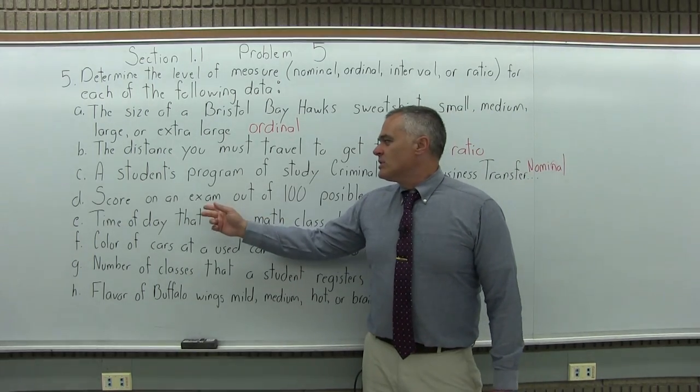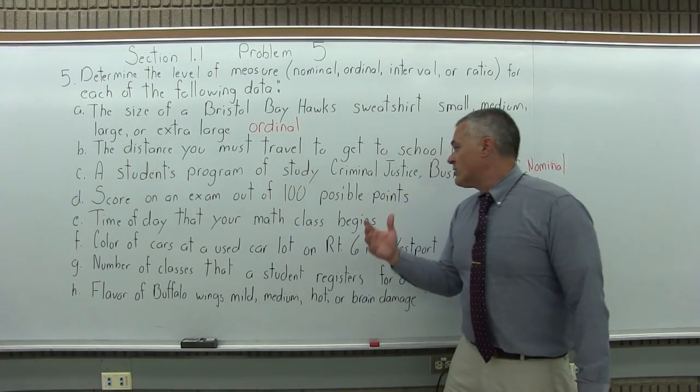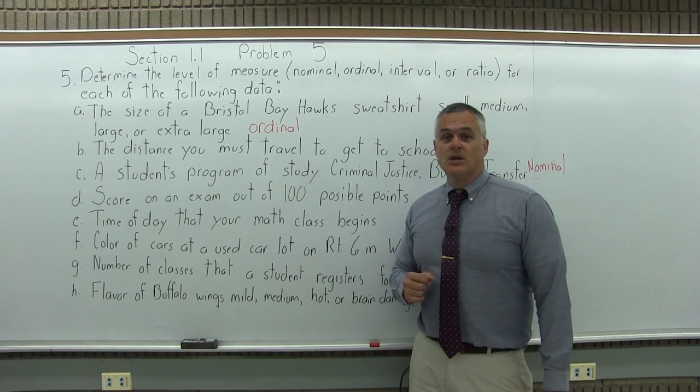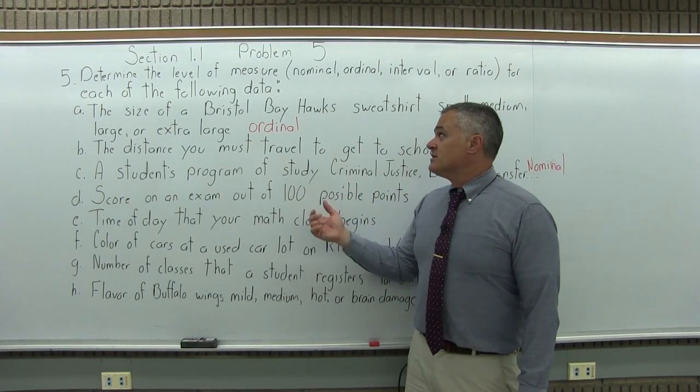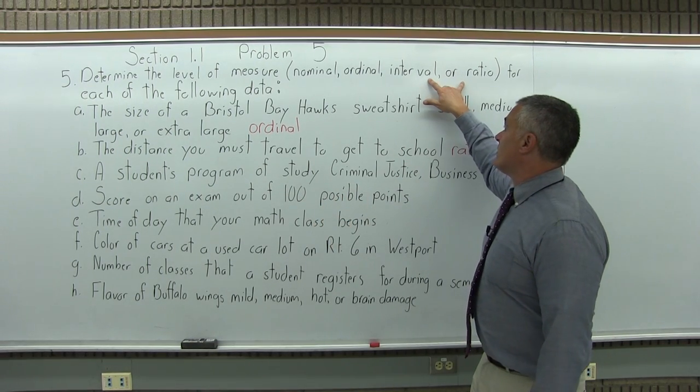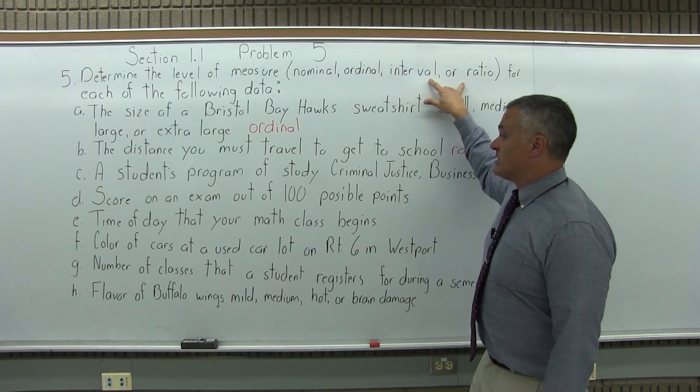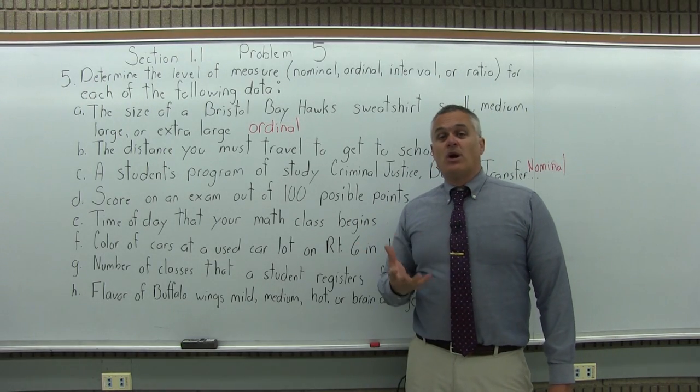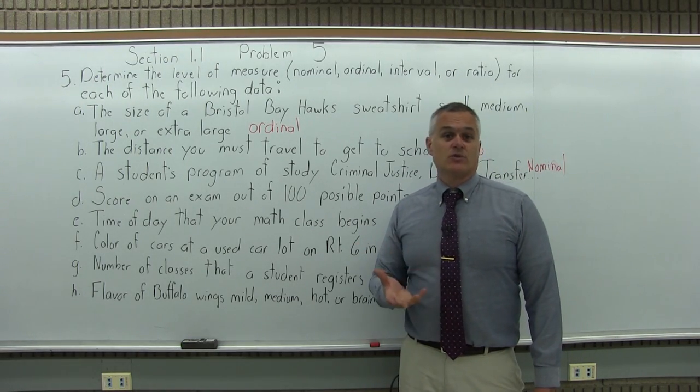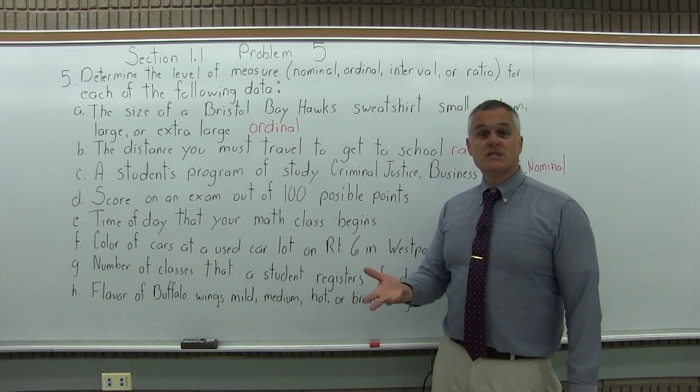And then D, score on an exam out of 100 possible points. So again, these are going to be number answers, which are going to put you into one of the last two levels of measure, either interval or ratio. And again, pick two possible number answers where one number is twice as big as the other and see if you get twice as much of something.